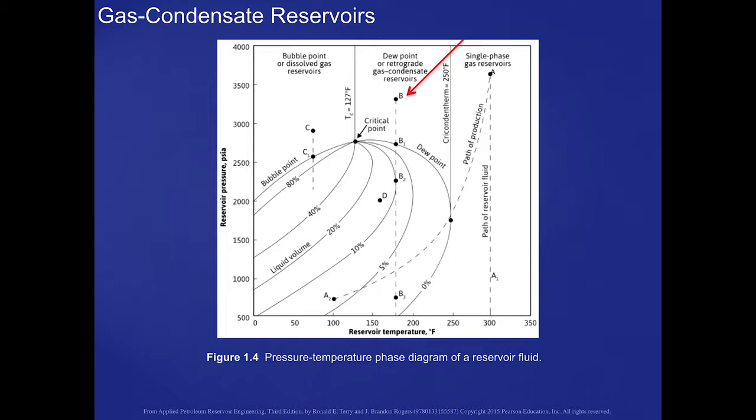Now if you notice, if we continue to drop the pressure, we'll reach a point in the phase diagram, in the two-phase part of the diagram, point B2, where the liquid begins to revaporize. At this point, these drops of liquid that have formed as condensate are beginning to go back into the gas phase. That's a good thing, because we want that condensate to still be in the gas phase until it gets to the surface, and then we produce the liquid.